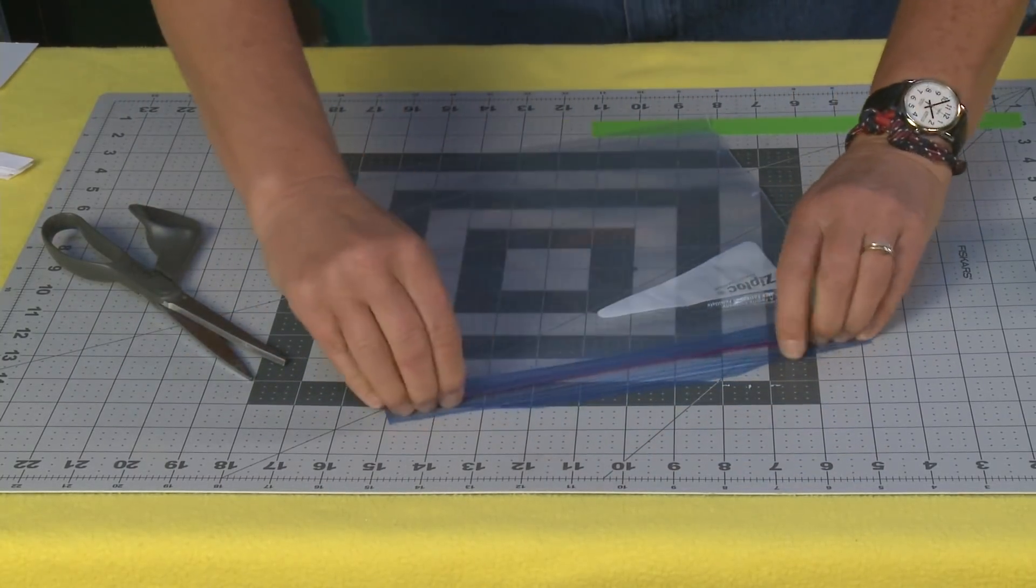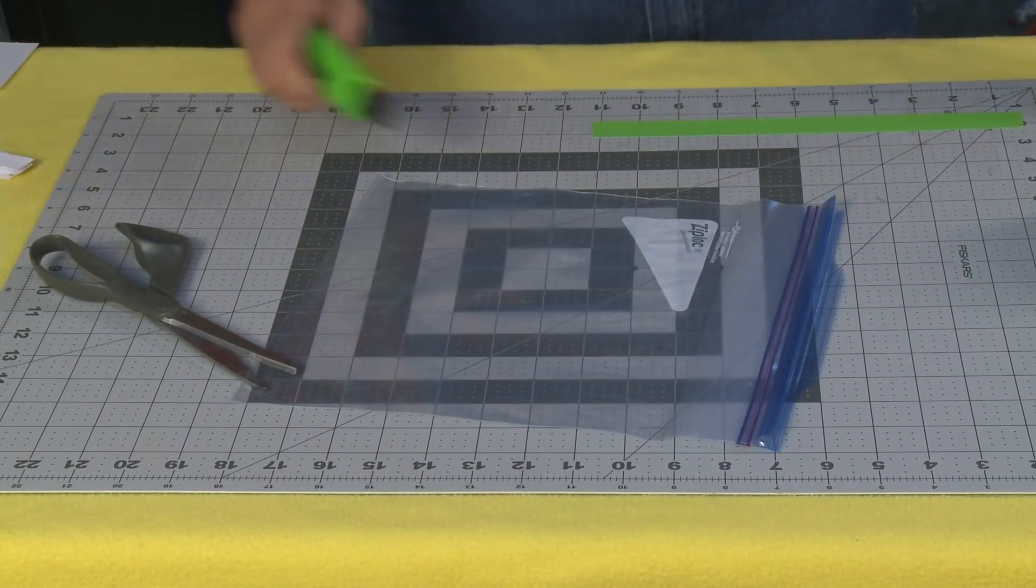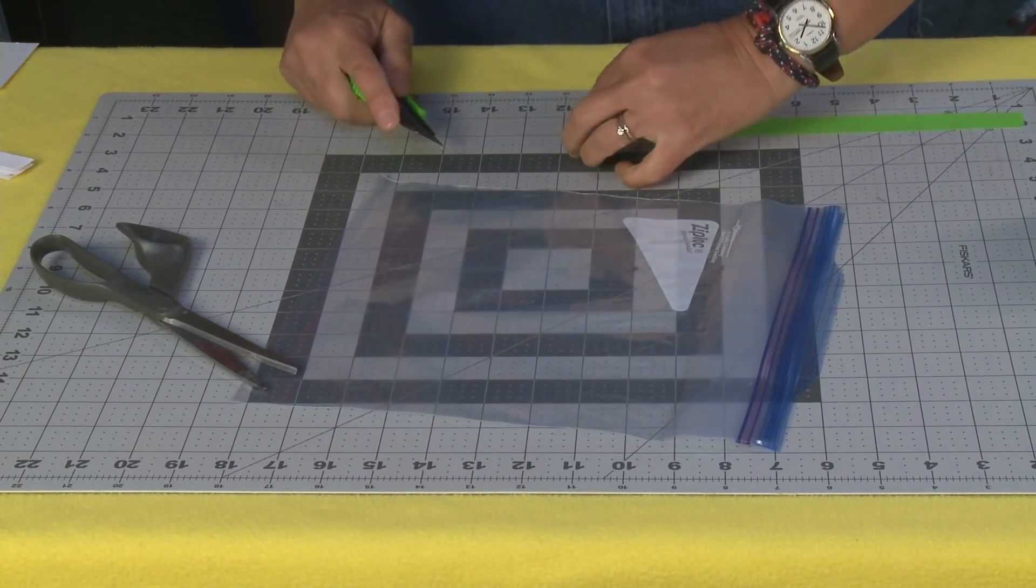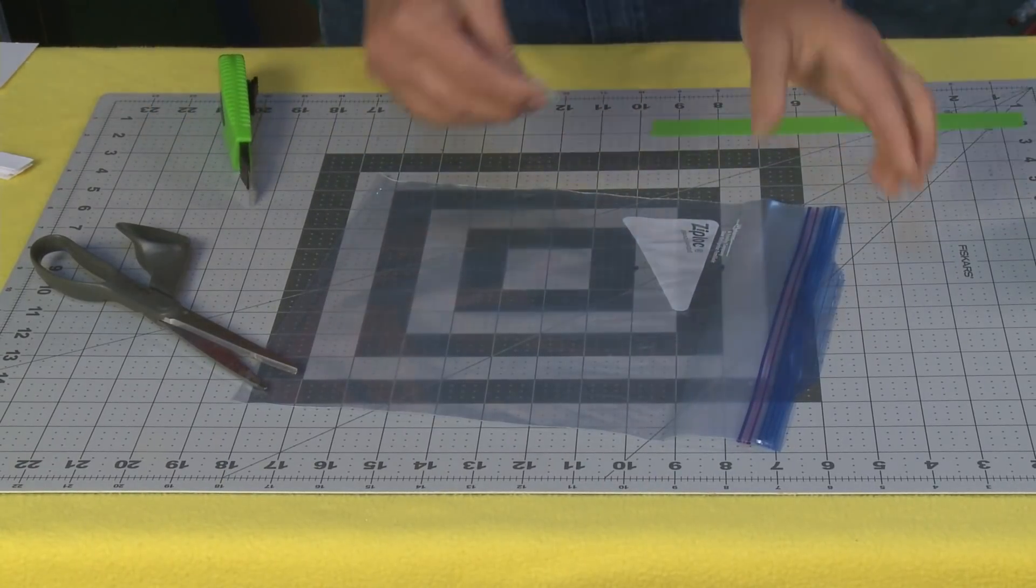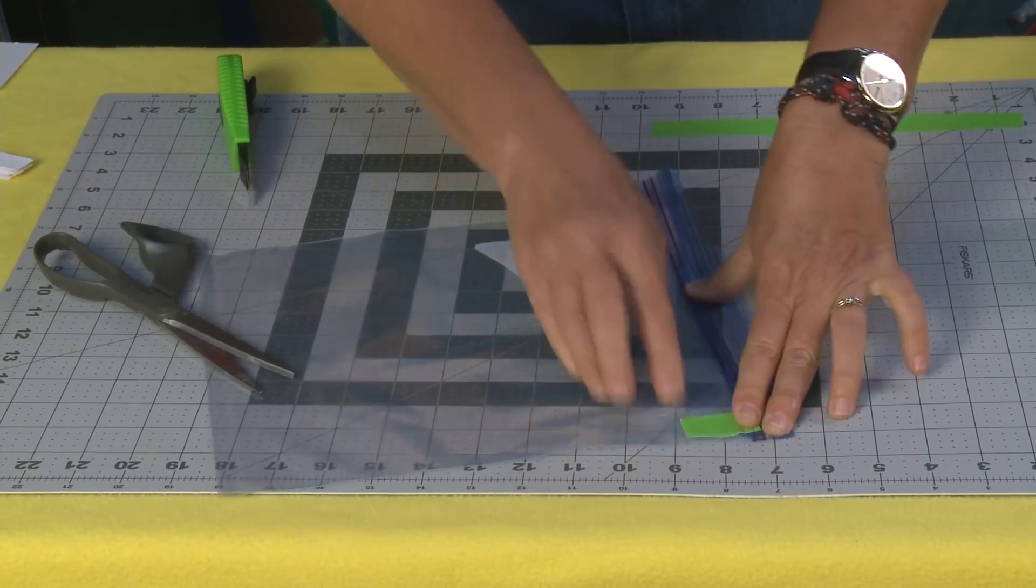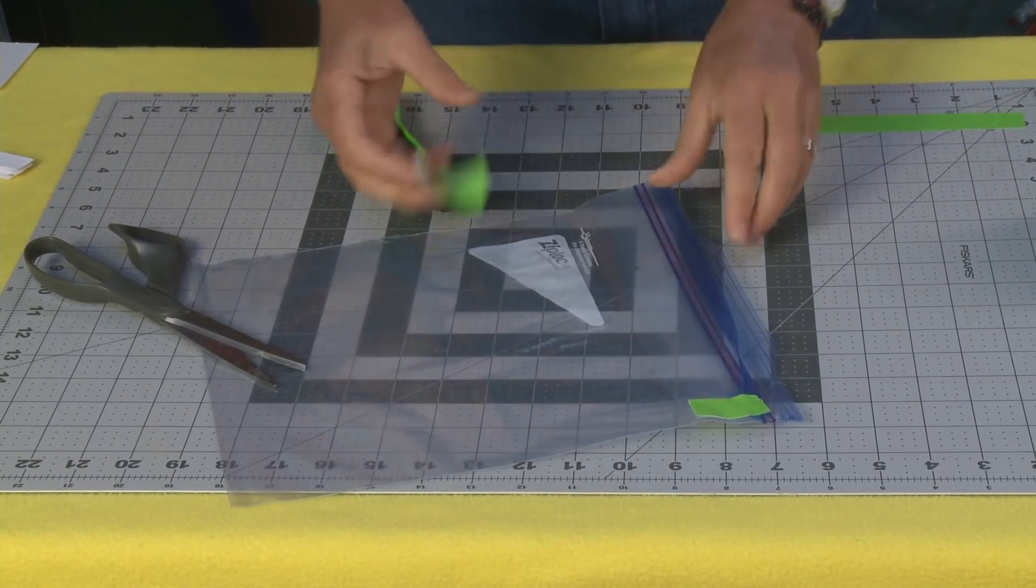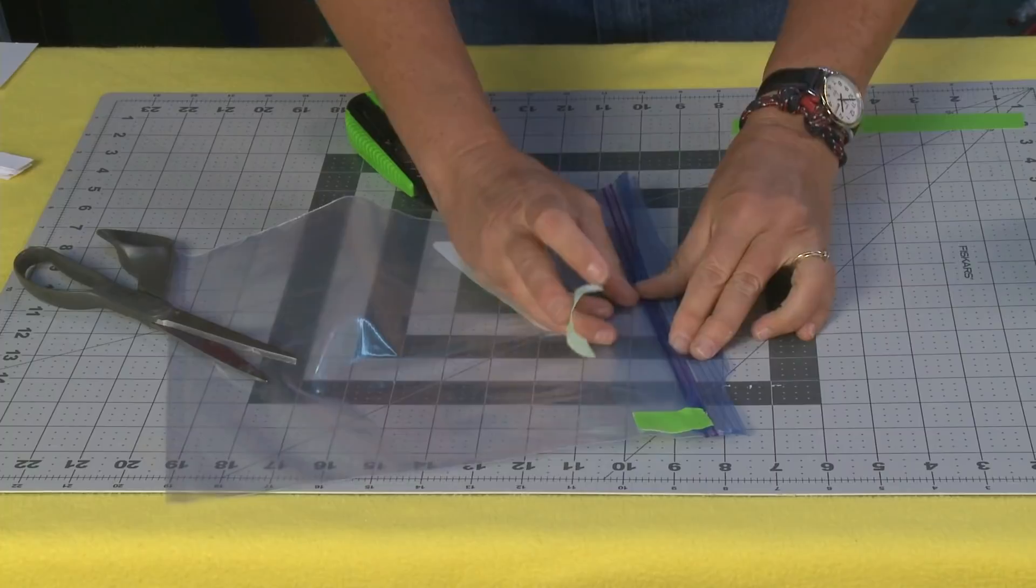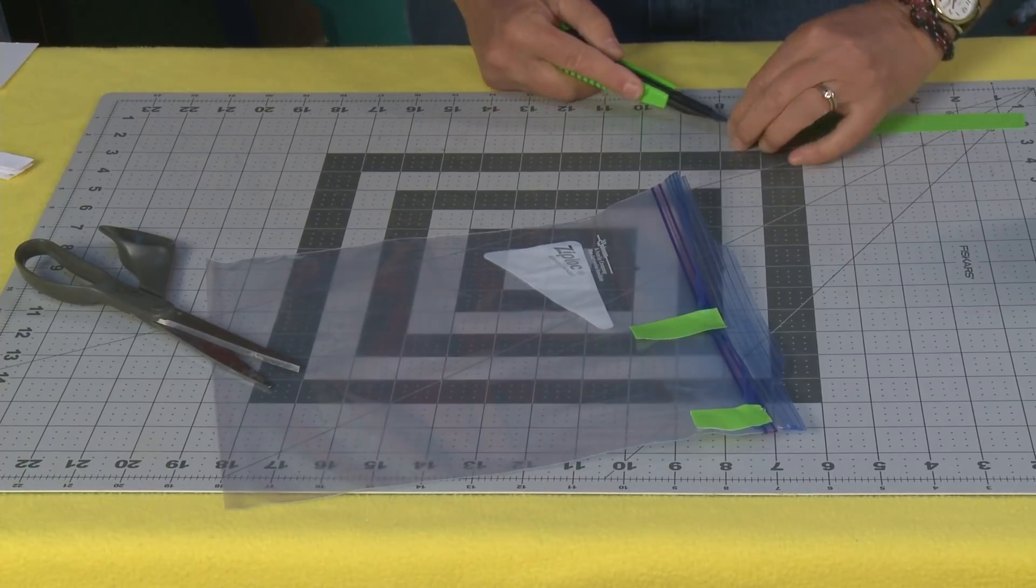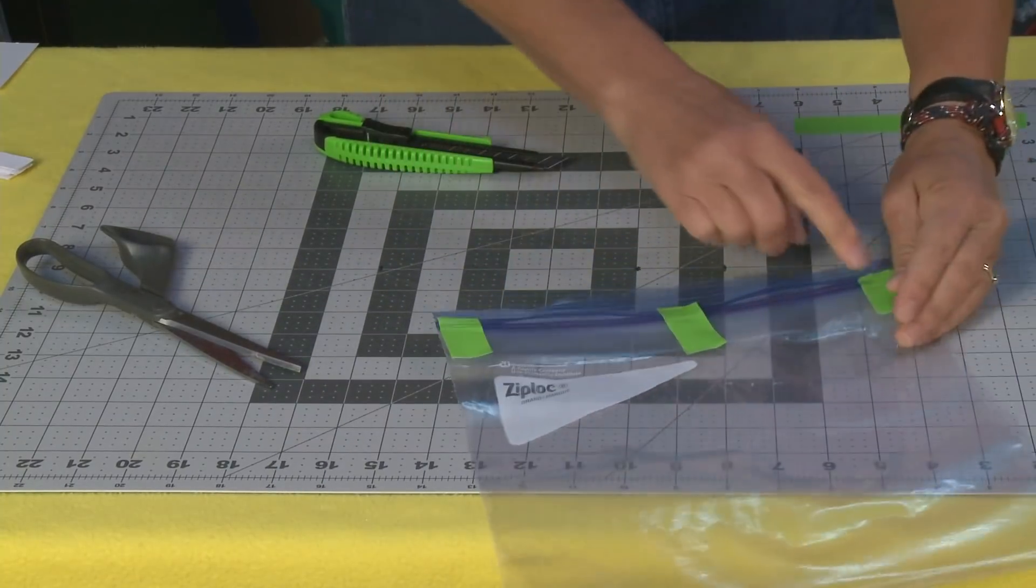Now what I want to do is take this edge here and I'm going to tape it down onto the Ziploc bag. So I'm just going to be using some tape, just little strips of tape here. I like to use three strips. That's what I find is a good number. You put one here, one in the middle, and one on this side over here. So you've taped down that back flap.